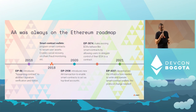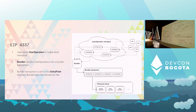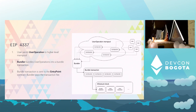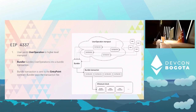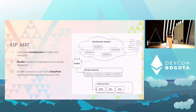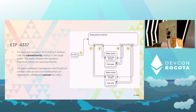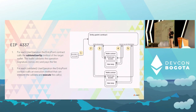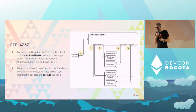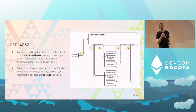With EIP-4337, users don't make transactions — they send user operations to a higher-level mempool. Bundlers, like miners, take a bunch of these user operations and bundle them into a normal L1 transaction, which is sent to a singleton contract called the entry point. When the transaction reaches the entry point, it orchestrates validation and execution by calling two methods on the wallet: one to validate — asking if the wallet is okay to execute and will pay the fee — and one to execute. So 4337 has a clear separation between validation and execution.